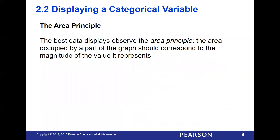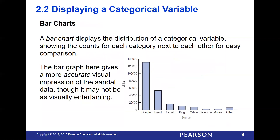Looking more at the area principle, we're going to look at some better displays of the same data that do observe it. Here we've got a simple bar chart showing the distribution of these same variables. You can see this is almost half — more than a third, almost half — visually speaking. That gives you a much more intuitive understanding of how those two particular data types compare to each other when looking at their various categories.